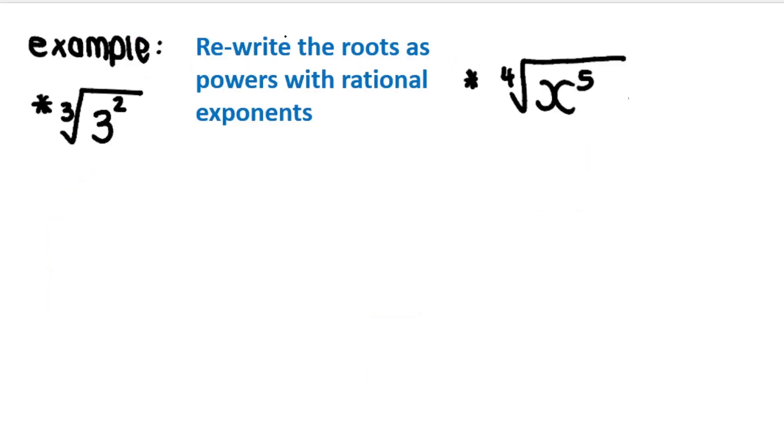So I can ask you, for example, to rewrite the roots as powers. So something with an exponent, a base with an exponent, but with rational exponents. So you write the base three, inside divided by outside. So the thing on the inside is the numerator, it goes on top. The thing on the outside is the denominator, it goes on the bottom.